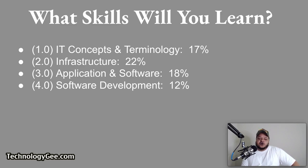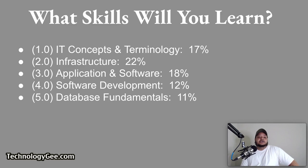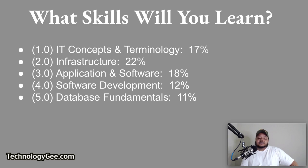Domain number four is going to focus on software development, and that's going to be 12% of your exam. This domain will help you with the comprehension of programming language categories, interpreting logic, and understanding the purpose of programming concepts. Domain number five is going to talk about database fundamentals, and that will be 11% of your exam. This domain will help you explain database concepts, structures, and purpose, as well as understanding methods used to interface with the database.